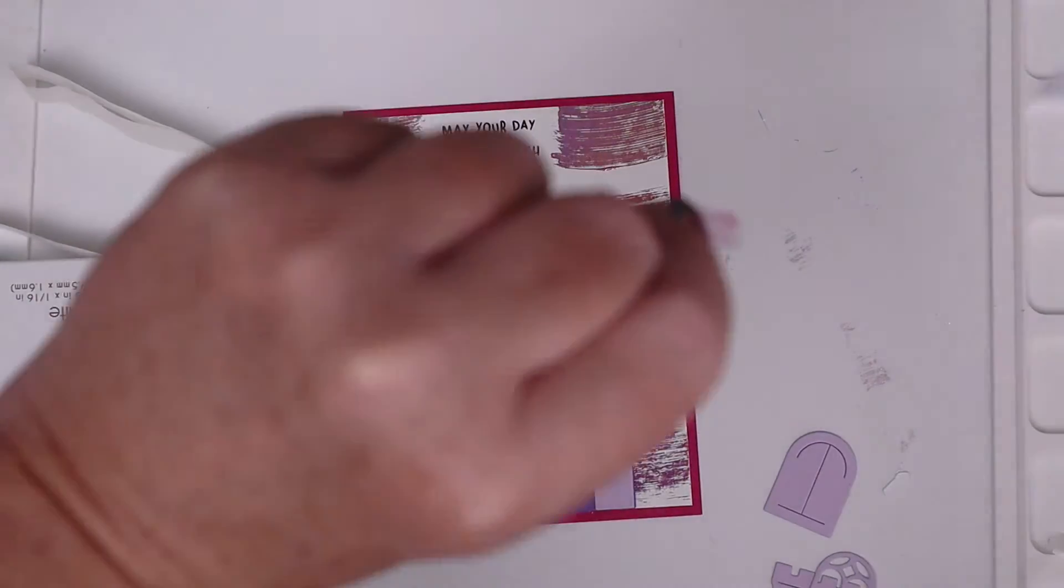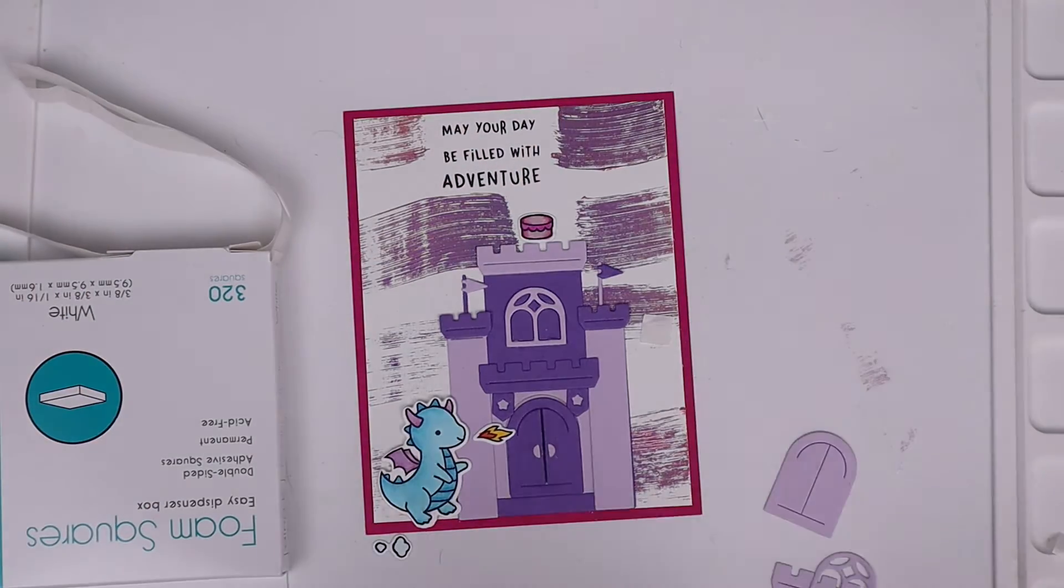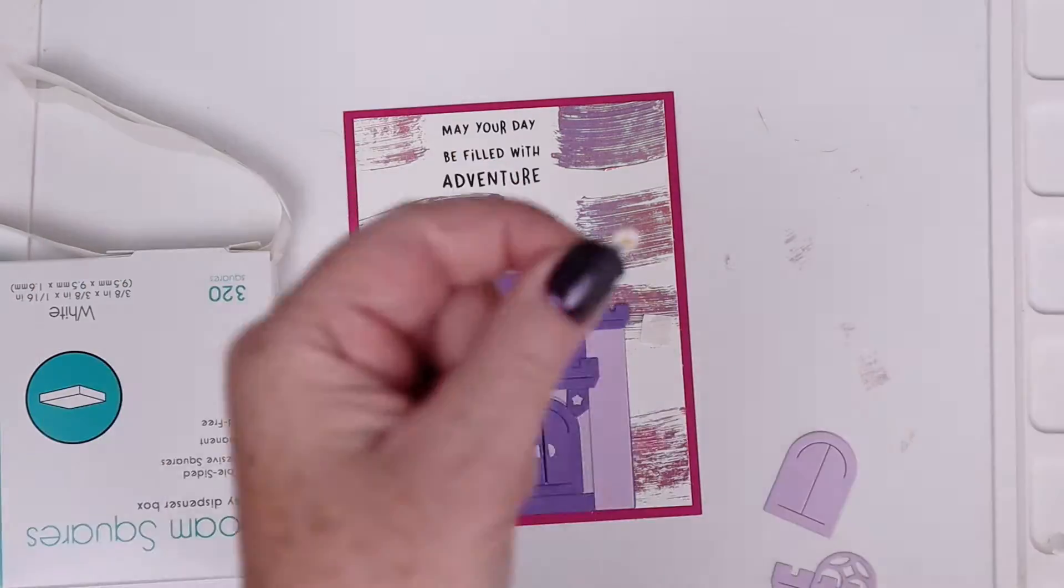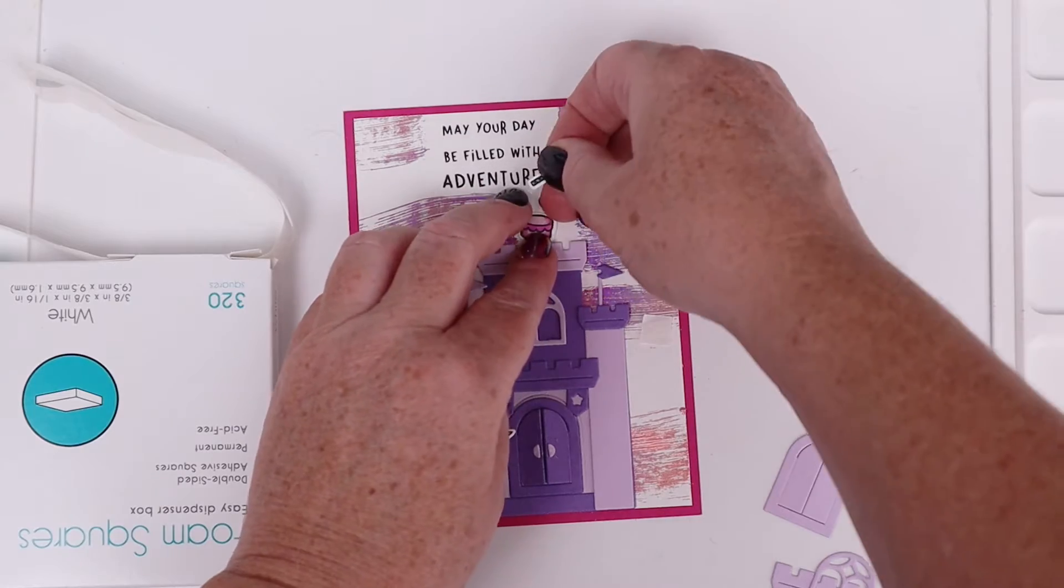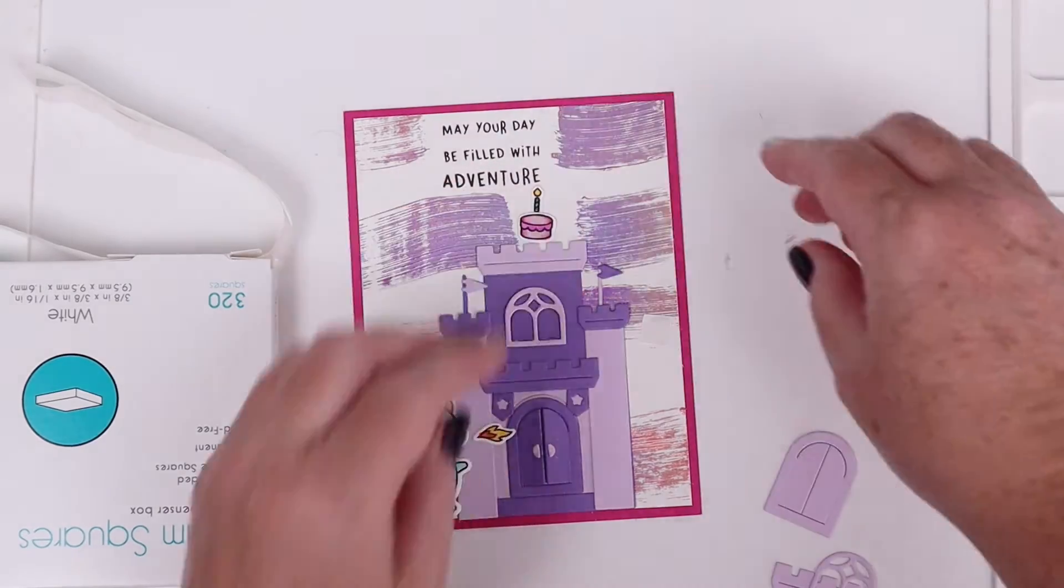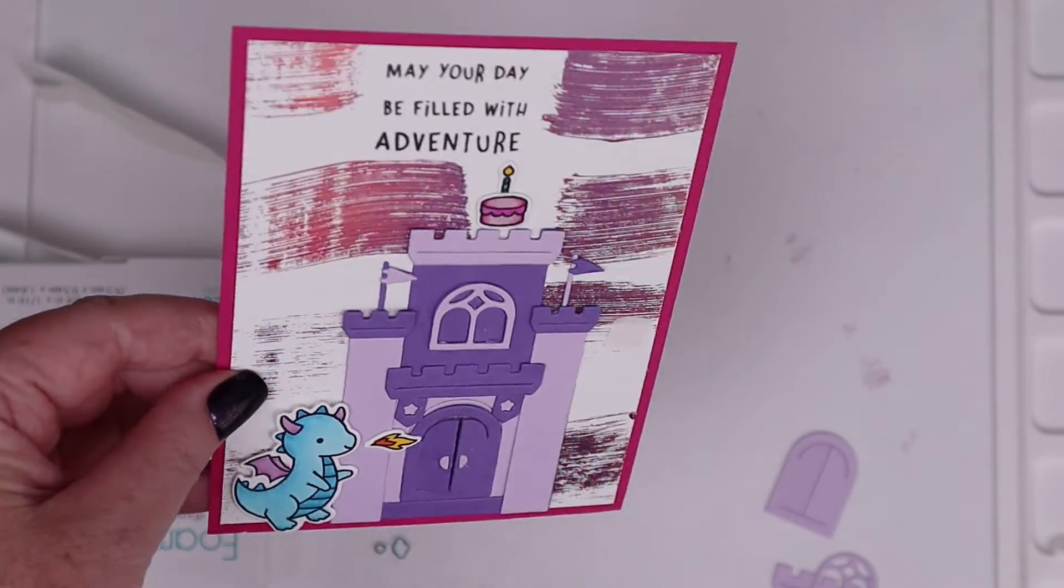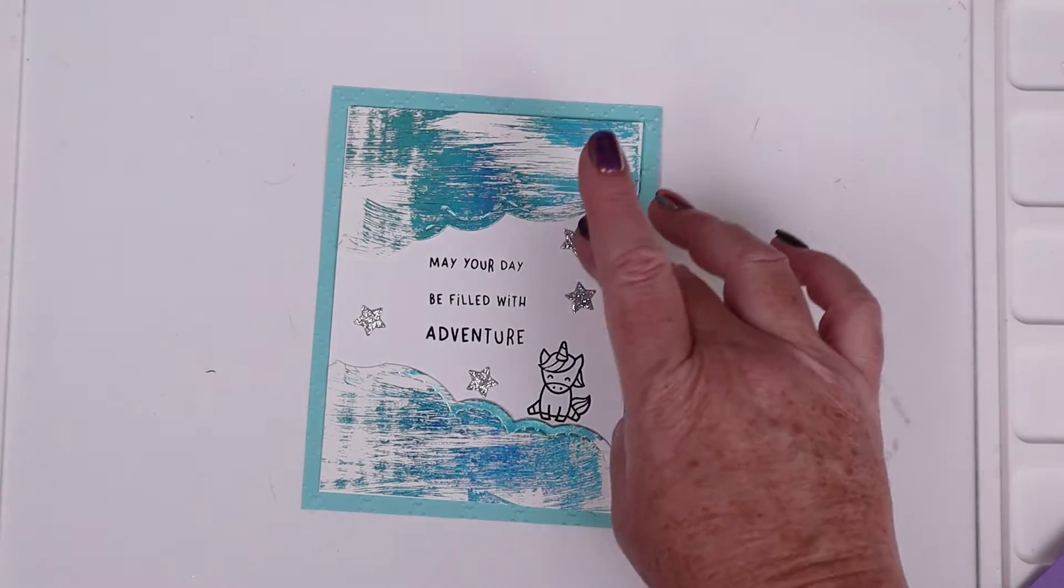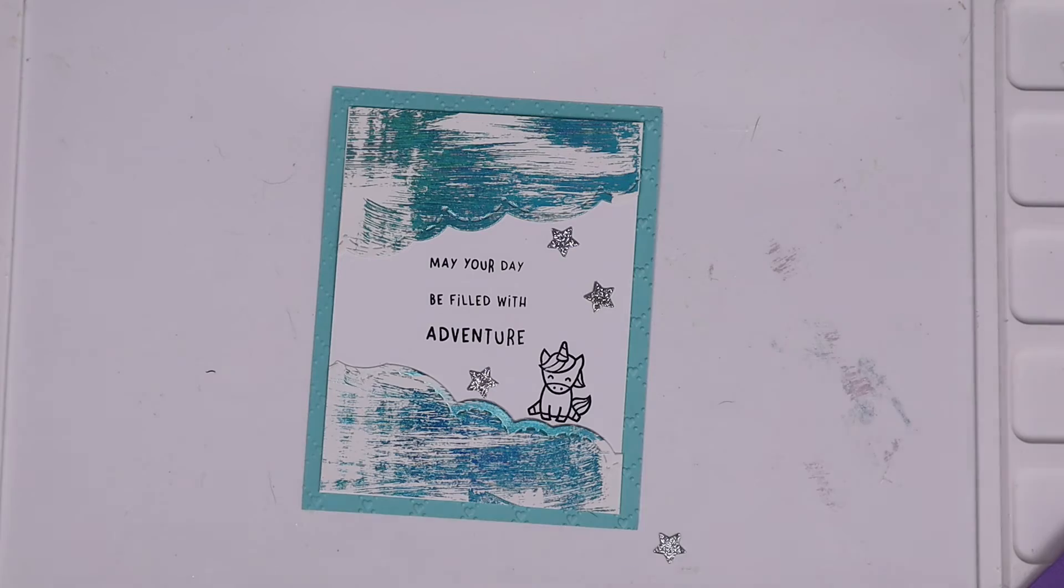I'm going to adhere his little burst of flame with some Ultra Bond liquid adhesive. Whenever I have tiny little pieces like this, whether it's sequins or tiny little die cuts like this cake that's going on top of the castle, I like to use the Ultra Bond liquid adhesive because it dries really clear so you can't see it if it squeezes out the side.